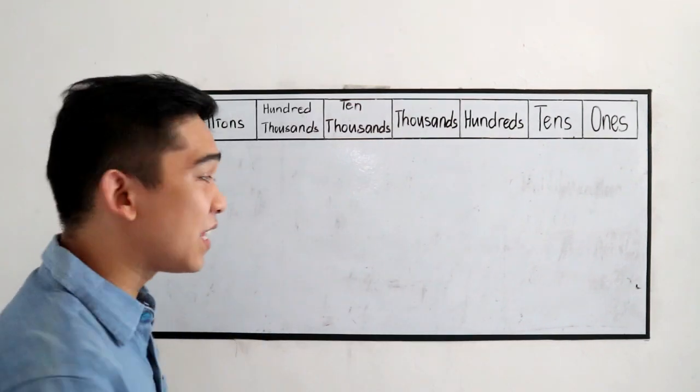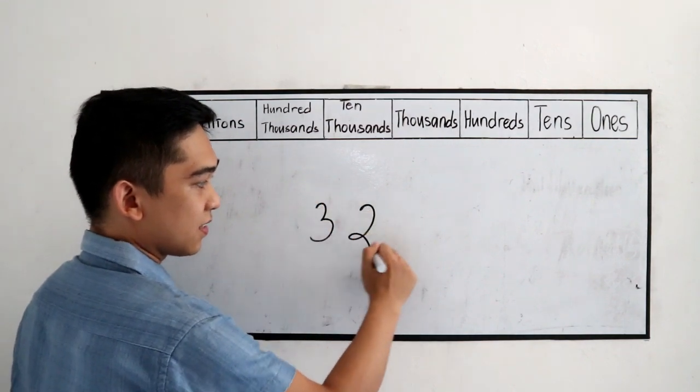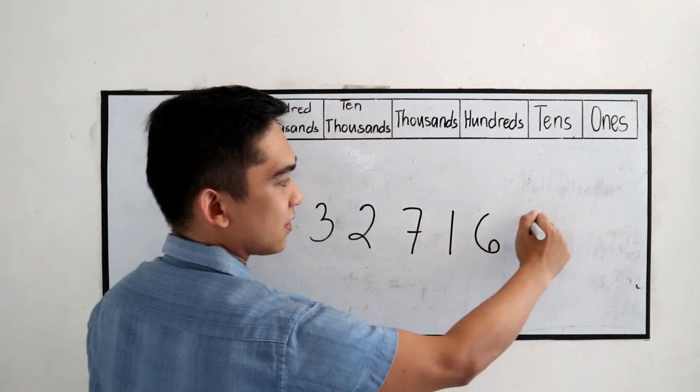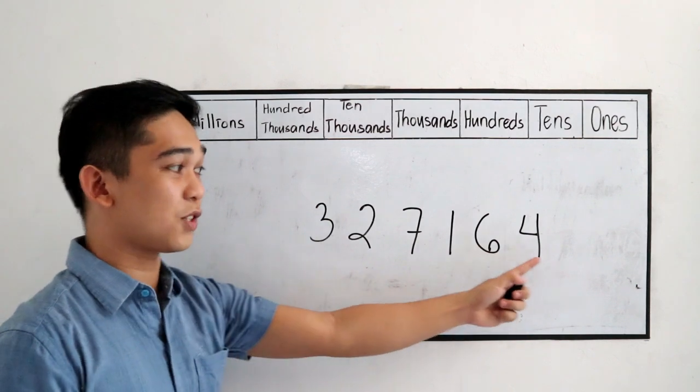Let's say we have this number: 3, 2, 7, 1, 6, 4.